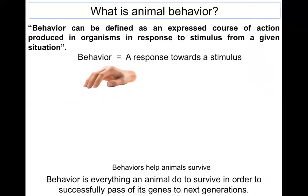So what is animal behavior? Behavior is what an animal does and how it does it. We can also define it as an expressed course of action produced in an organism in response to a stimulus from a given situation.